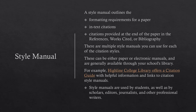A style manual outlines the formatting requirements for a paper, in-text citations, and citations provided at the end of the paper in the references, works cited, or bibliography. There are multiple style manuals you can use for each of the citation styles. These can be either paper or electronic manuals and are generally available through your school's library.